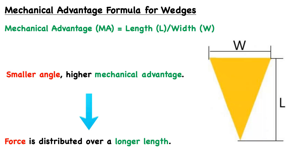As an inclined plane, where is this mechanical advantage effectively coming from? It's essentially the same as we saw in the inclined planes and in the screws — which again were just a modified type of inclined plane. Force is being distributed over a longer length, and this is why effort is reduced.